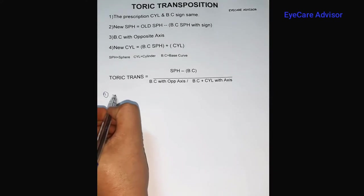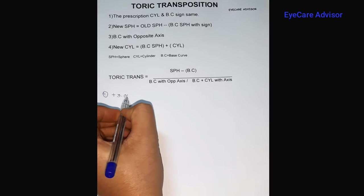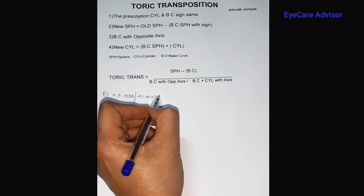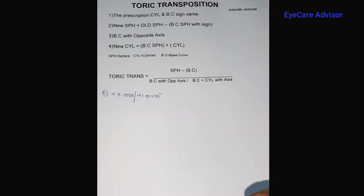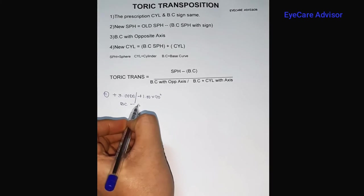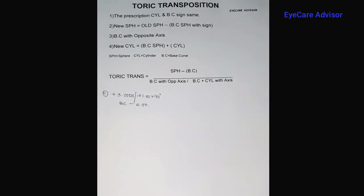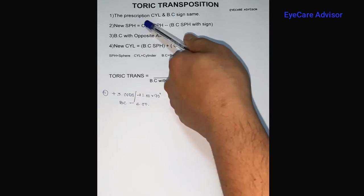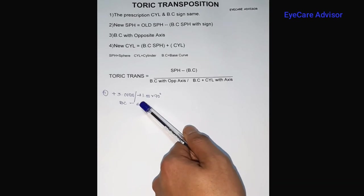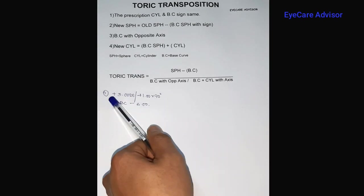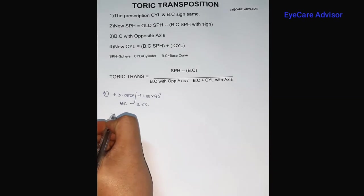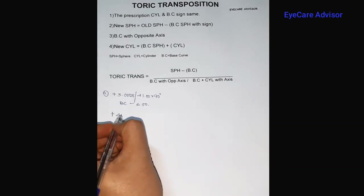In the first example, I will use plus three spherical with plus one diopter cylinder at 90 degree axis, and for this case we will take the base curve as minus six diopters. The first step requires that the prescription cylinder and the base curve cylinder should be the same sign. Since they are not the same here, we have to do a simple transposition and change it to minus cylinder.